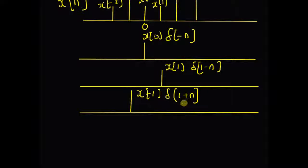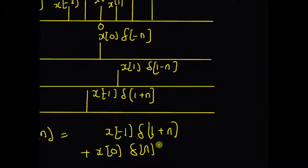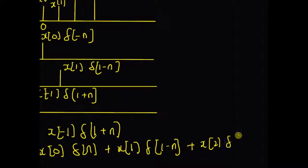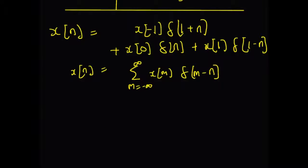Originally, this is equal to delta of minus one minus n. But since the unit sample is an even function, we can write it as delta of one plus n. So we can clearly see that the given sequence x of n is equal to a linear combination: x of minus one multiplied by delta of one plus n, plus x of zero multiplied by delta of n, plus x of one multiplied by delta of one minus n, plus x of two multiplied by delta of two minus n, and so on. It is an infinite number of terms. So x of n equals the infinite sum m equal to minus infinity to plus infinity of x of m times delta of m minus n.